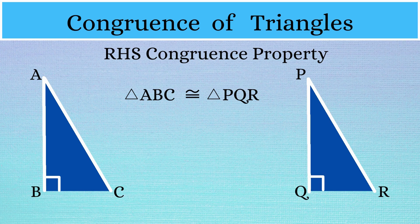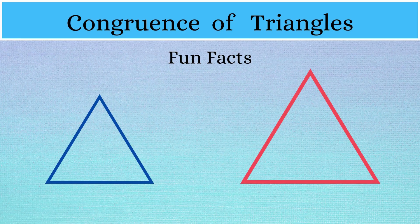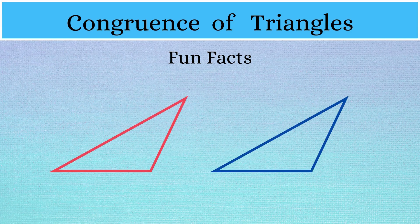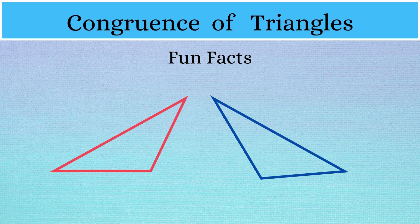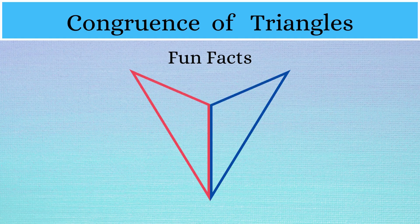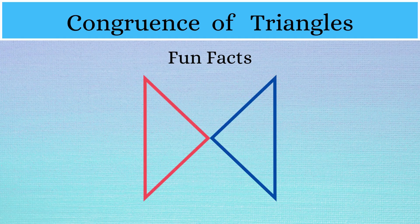Now let us get to know some facts about congruence of triangles. Two triangles may not be congruent if their corresponding angles are all equal. Congruent triangles can be rotated and they will still remain congruent. Also, the mirror image of any triangle is congruent to the original triangle.